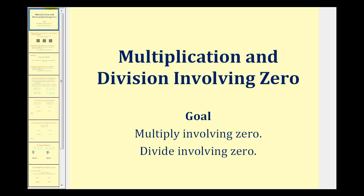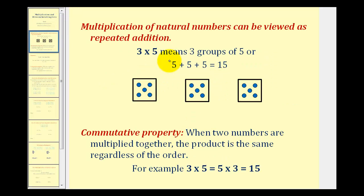Welcome to a lesson on multiplication and division involving zero. I'd like to start by talking about what we already know about multiplication. Multiplication of natural numbers can be viewed as repeated addition. For example, if we have three times five, this means we have three groups of five, which can be modeled using this diagram here or by repeated addition. Either way, the product would be 15.